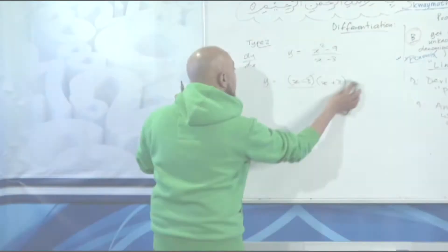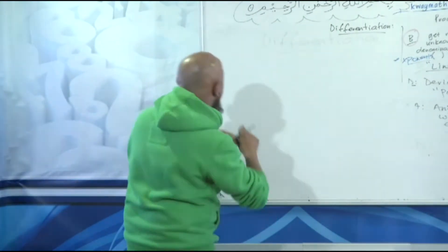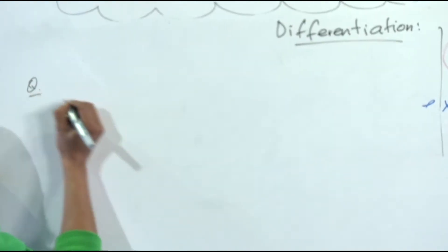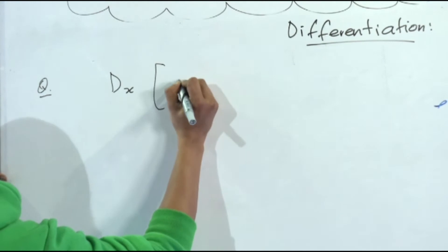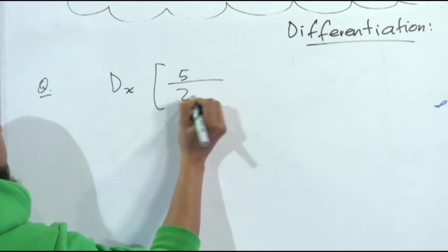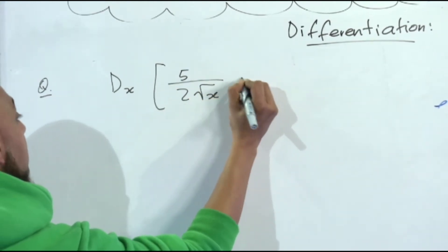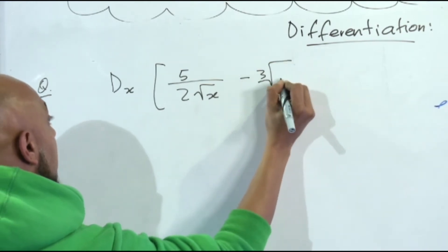Let's go on to Type 3. Let's see how well you can perform with this one. Question in the exam: I tell you dx, 5 over 2 root x minus the cube root of x plus 5 over x squared.